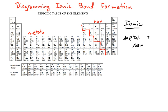Now let's look at how we would diagram the formation of an ionic compound like sodium chloride. Sodium chloride has sodium, which is an alkali metal — it has one valence electron. Chlorine is a halogen; halogens located on the periodic table have seven valence electrons.